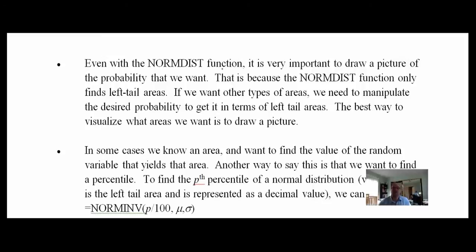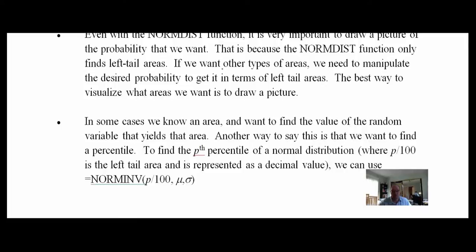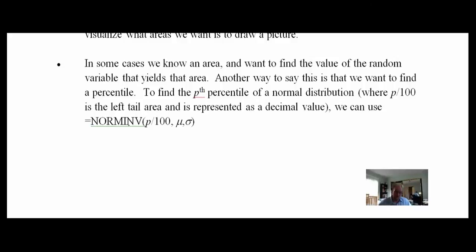Very important: draw pictures of probabilities, because the NORMDIST function only gives us the left-tail area — from negative infinity to our point. Sometimes we'll want something greater than a point, or a range. The NORMINV function is the opposite of NORMDIST: it gives us a percentile of a normal distribution. If we want the 90th percentile, we tell it the probability, the mean, and the standard deviation, and it gives us the corresponding point.